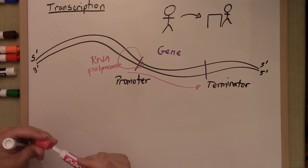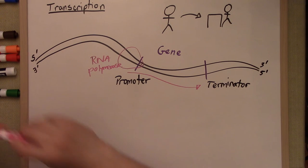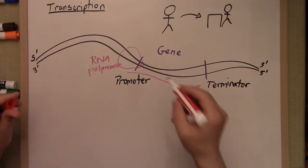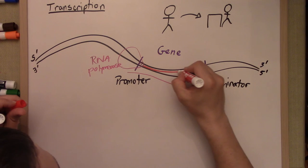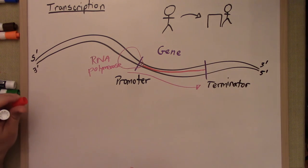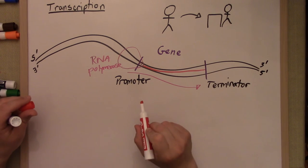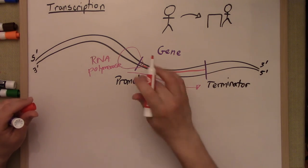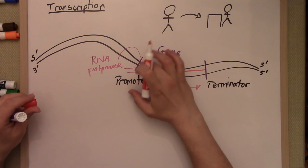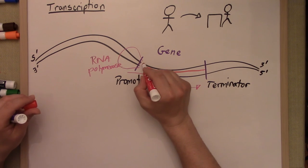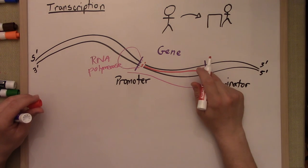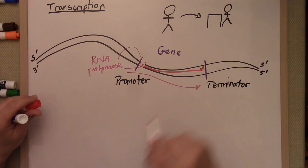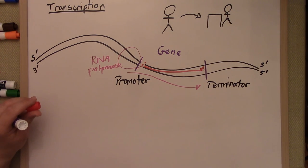RNA polymerase is going to build a piece of RNA — I'm going to draw that here in red. As a polymerase, it makes a polymer — in this case a long chain of RNA. It's going to build from the five prime to the three prime. So the five prime end of that piece of RNA is here, and the three prime end is here. That's what RNA polymerase is going to do.